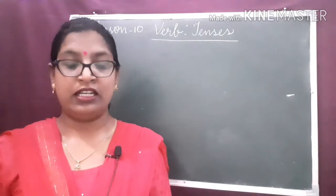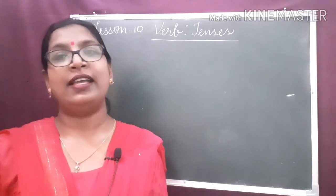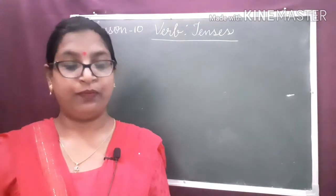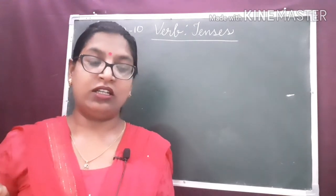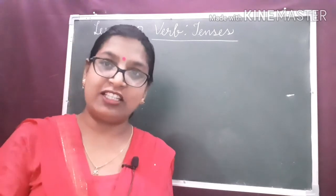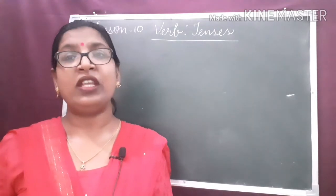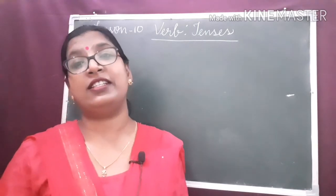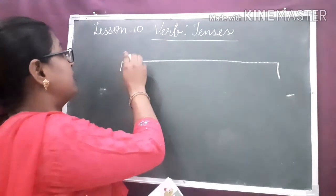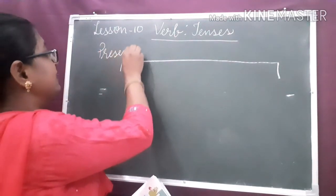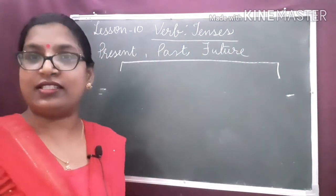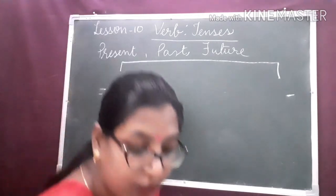First of all, dear children, tense indicates the time of an action. It tells us and expresses an action in terms of time. Tense indicates whether the action took place in the present, in the past, or in the future. Basically the tenses are divided into three parts: the first one is present tense, then past tense, and future tense.